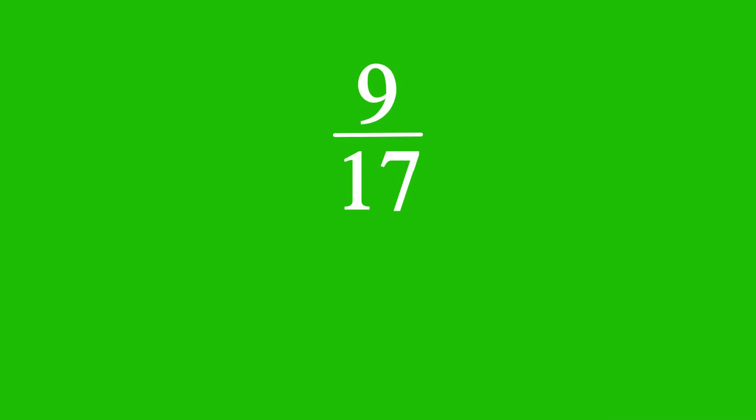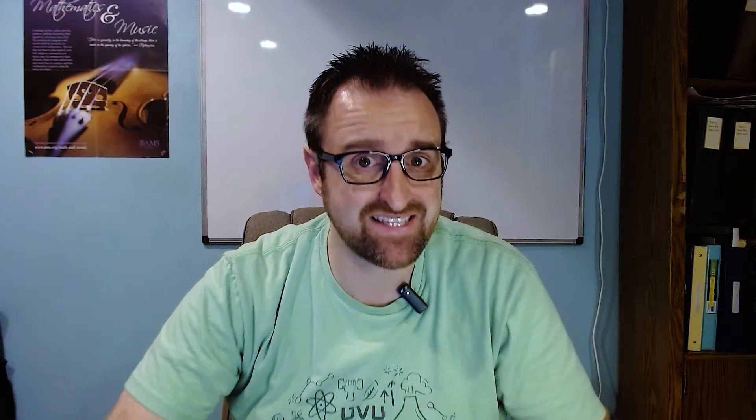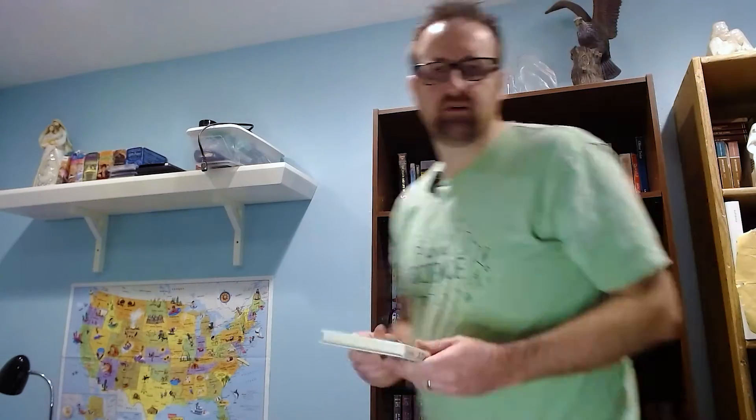And nine-seventeenths is the number 0.5294117647058823 repeated. That is, that same 16 digit sequence repeats forever, which again never ends. I'm sure some of you are saying that what people mean by that is that pi's decimal representation never repeats indefinitely. And that's true, and yeah, we are getting a little more interesting.